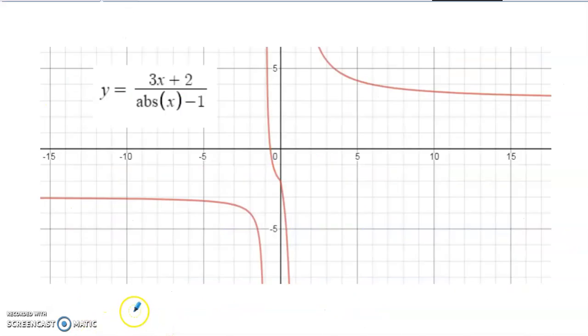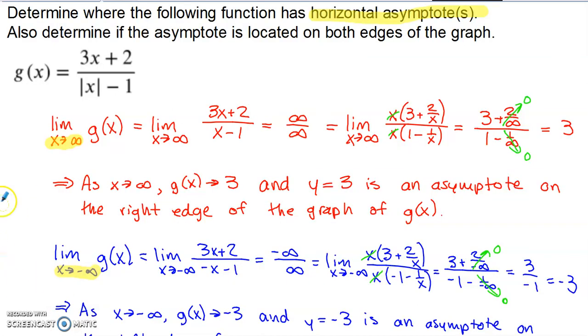Just to confirm all our work here, I did produce a quick graph of this on the Desmos website. If I look way over here on the right edge of the graph, my y value is leveling off. If you look at the scaling, my y value is leveling off at the y value of 3. And as I come way over here to the left edge of the graph, my y value is leveling off at the y value of negative 3. So it's kind of weird to have a situation where you don't have the same horizontal asymptote on each edge of the graph. That's typically going to happen when you have an absolute value floating around somewhere within your function.